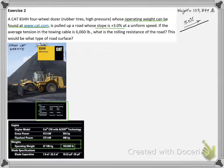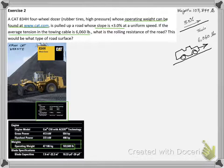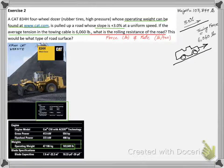The dozer is pulled at an upward grade of 3%. The towing force was measured to be 6,060 pounds. So we need to calculate the rolling resistance of the road.